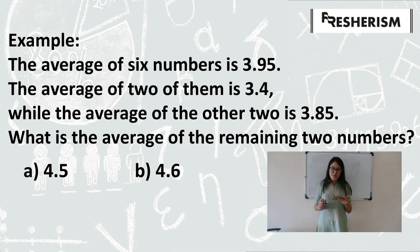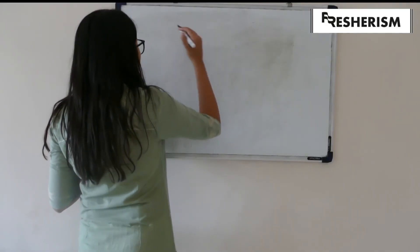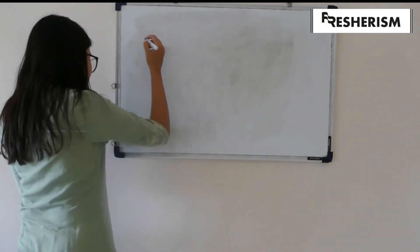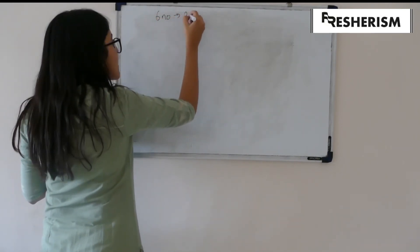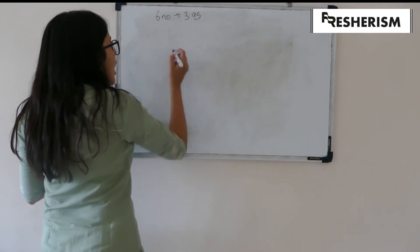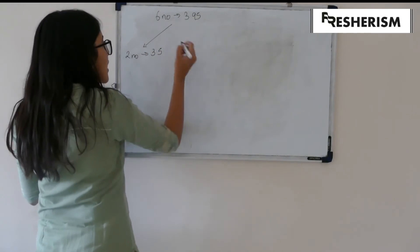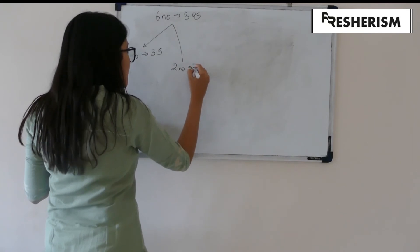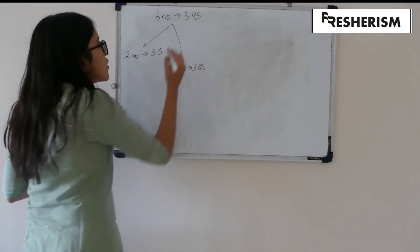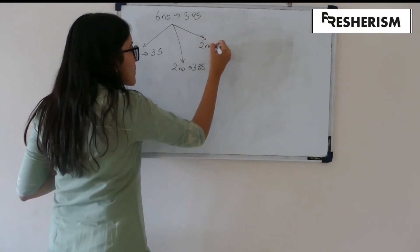Option A, 4.5; Option B, 4.6; Option C, 4.7; And Option D, 4.8. Look at this now. The question says that the average of 6 numbers is 3.95. Out of which, 2 numbers give the average of 3.5, and the other 2 give the average of 3.85. Now, we are asked to find out the average of the other 2 numbers.